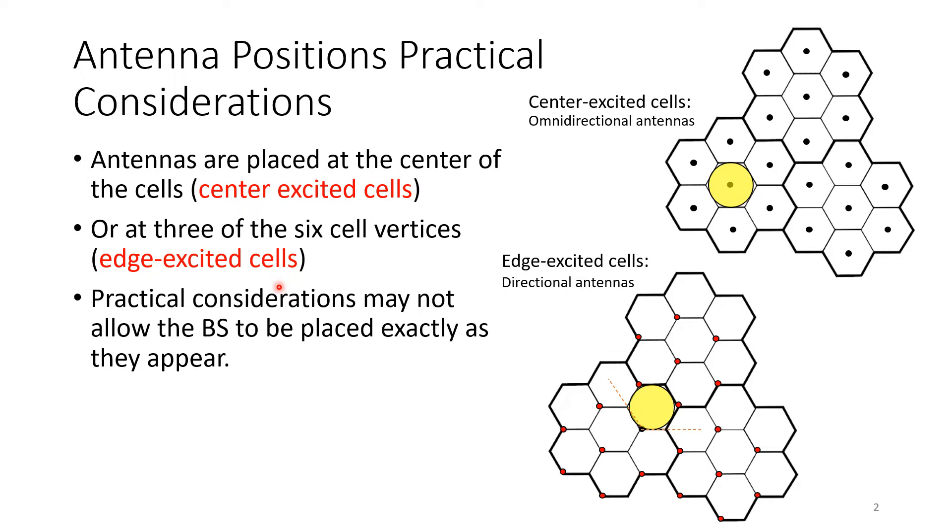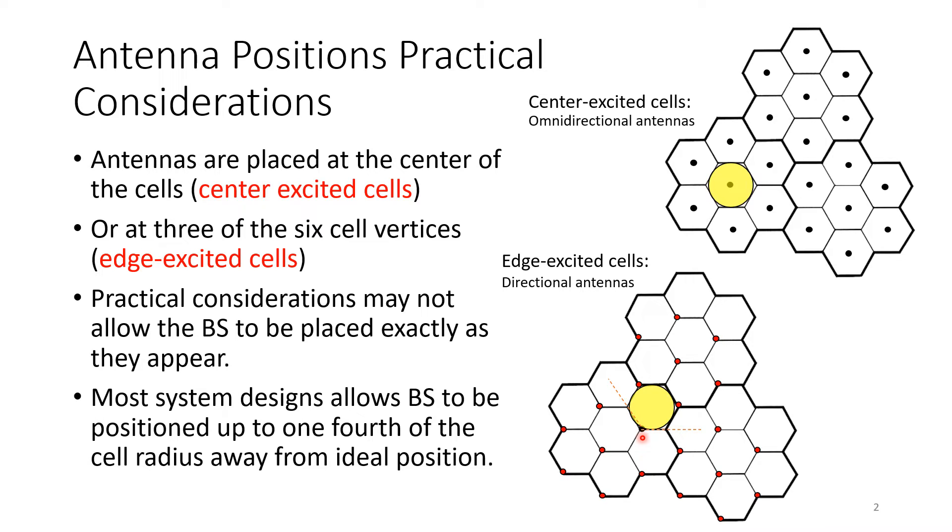Practical considerations may not allow the base station to be placed exactly where you want, here in the center or the edge, because of building obstructions, topography. But this is just to get you the theoretical two possibilities. Most system designs allow base stations to be positioned up to one fourth of the cell radius. So from here to here we have one R, the radius from the center to this corner. Most of the designs allow you to have some maneuvering on the order of one fourth of the cell radius.